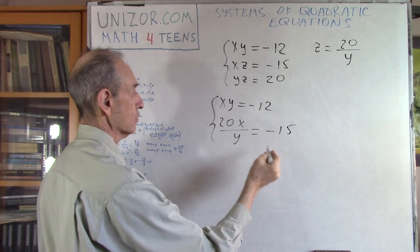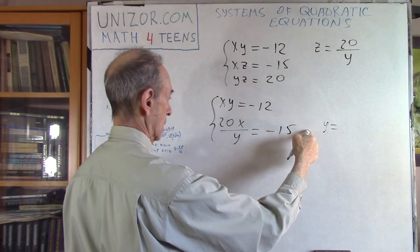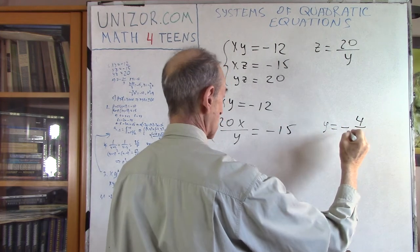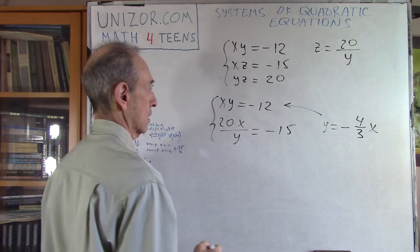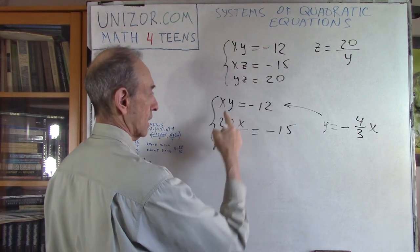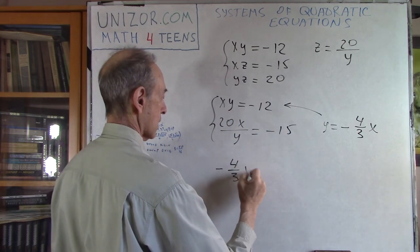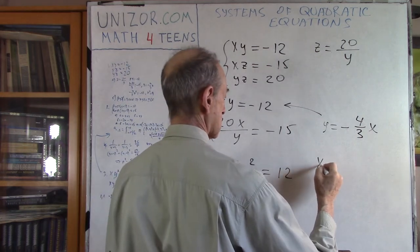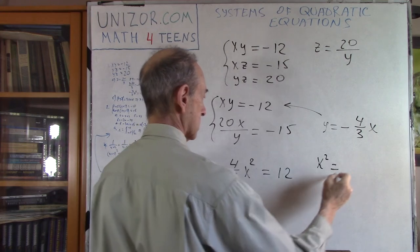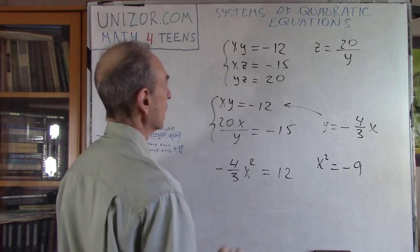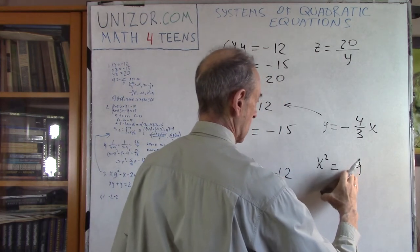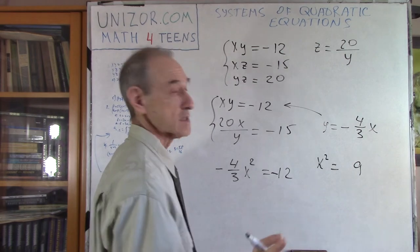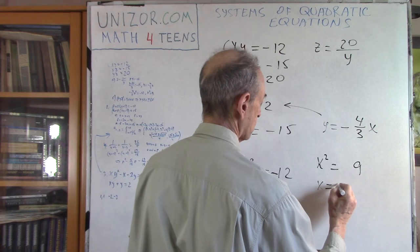From this we can always resolve it for Y equals minus 20 fifteenths, which is minus 4 thirds X, and substitute it into this. And finally we get X times Y, which is minus 4 third X squared, equals 12. From which X squared is equal to minus 9. We are solving equations usually among real numbers only. Which is X is equal to plus or minus 3.